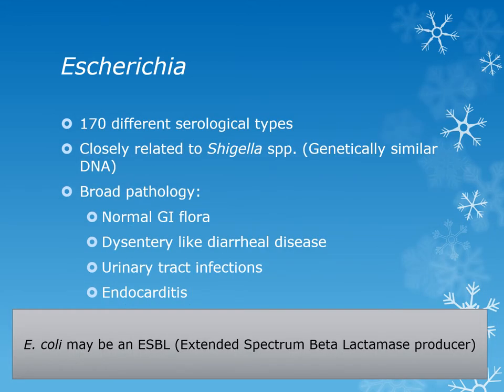There are 170 different serological types for Escherichia, and they are biochemically closely related to Shigella — in fact, genetically similar in their DNA and in the same tribe. Most of the time Escherichia can be normal gut flora, unless of course they are a toxin strain like a Shiga toxin-producing strain. A Shiga toxin is a toxin that is Shigella-like in nature but actually produced by Escherichia. Escherichia can cause dysentery-like diarrheal disease, especially from O157:H7 or other toxigenic strains. It is the number one cause of urinary tract infections in women and can lead to other opportunistic diseases like endocarditis.